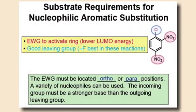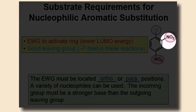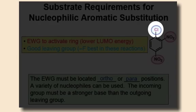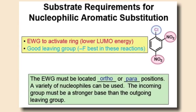To sum up the nucleophilic aromatic substitution mechanism that follows an addition-elimination pathway: there needs to be electron-withdrawing groups at either the ortho or para positions, or both, for this reaction to proceed at an appreciable rate. Secondly, there must be an appropriate leaving group on the ring. The leaving group must be a weaker base than the incoming nucleophile to facilitate the beta elimination step.